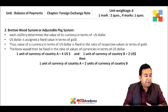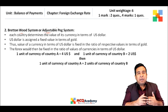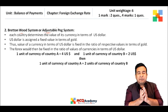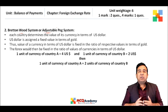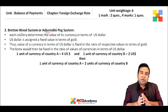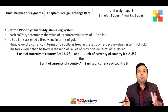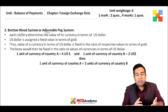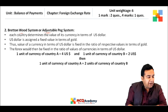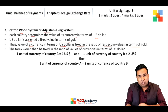The Bretton Wood system is also called the adjustable peg system. In the previous method, every currency was fixed in terms of another currency. In the Bretton Wood system, the value of every currency was decided in terms of a single international currency — the US dollar — and this was further decided on the basis of gold's purchasing power.